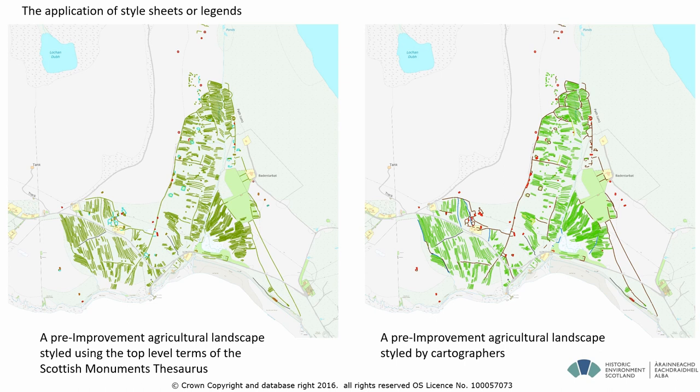We use the Monuments Thesaurus. The Scottish Monuments Thesaurus is very similar to the English and Welsh Monuments Thesauri. We applied the broad terminologies — the broad classification of domestic, settlement, and agricultural terms — to our map field survey work from the west of Scotland. This produced a map that shows all the agricultural features in green, but cartographically it's not a pleasing result. We need to then refine it to pick out the features, using a cartographer's style to pick out the land, the banks, and things that bring out the field pattern.